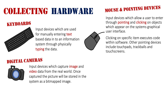Next we have digital cameras. These are input devices which capture image and video data from the real world. Once captured, the picture will be stored in the system as a bitmap image or as a specific video type, which puts it into the information system when the camera is connected to the system — whether that be through cable, or now they've got Wi-Fi functionality as well, to bring that video and image data over.